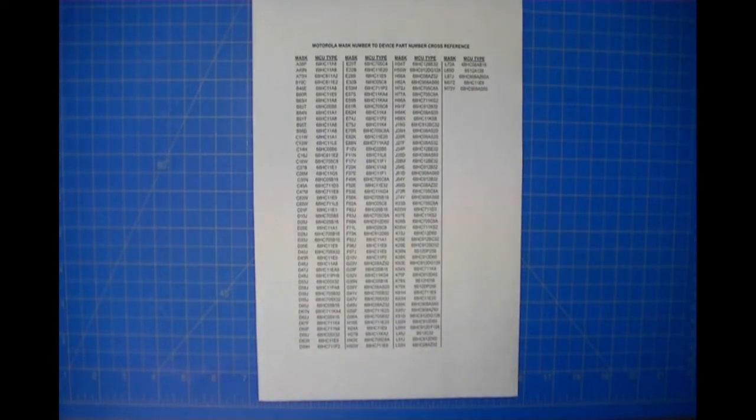With our software, you have to identify the part by its industry standard part number, not by its mask number. We provide a mask to part translation table in the library. So those are the two pieces of documentation. Now the next thing we're going to do is install the ACOM 2 in the programmer and install the transition board and attach a probe set.